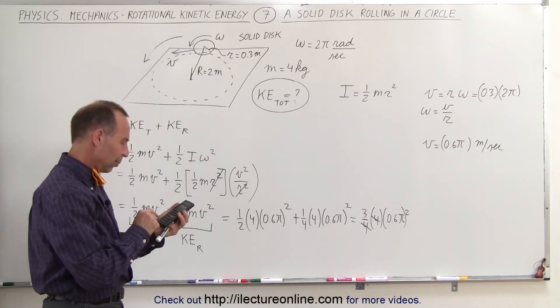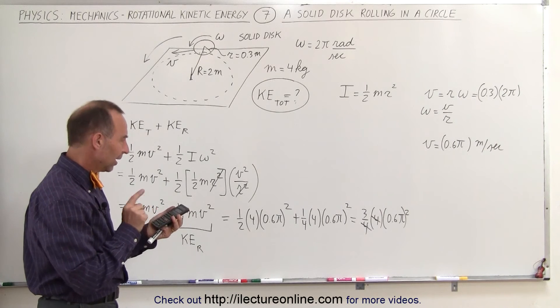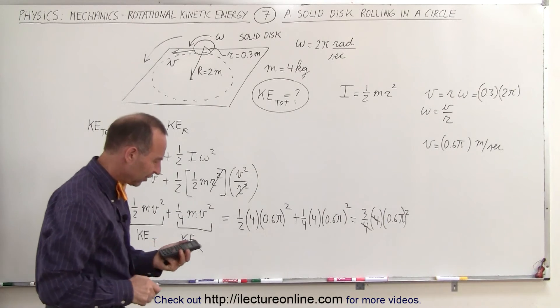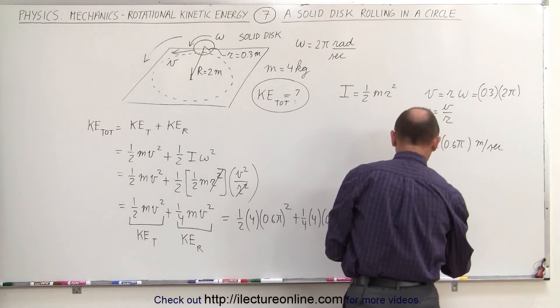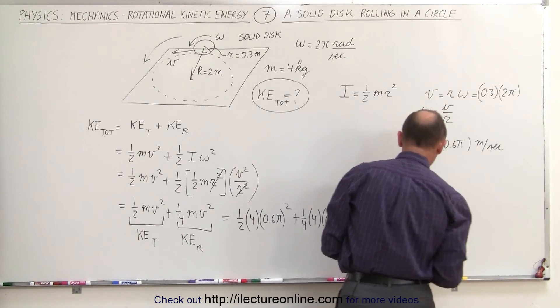We get 0.6 times pi, then we square that, and then we multiply it times 3, and we end up with 10.66, or let's say, round it off to 10.7, that would be joules.